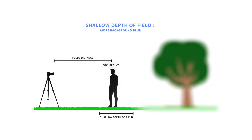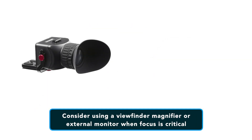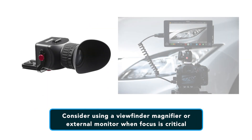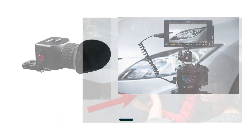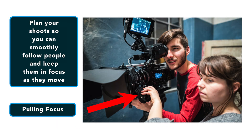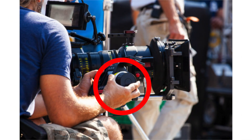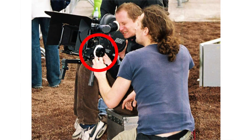Focusing can be extremely tricky with very shallow depth of field. Consider using a viewfinder, magnifier or external monitor when focus is critical. Also, plan your shoots carefully so that you can smoothly follow people and keep them in focus as they move. In Hollywood, there are people called focus pullers, and their job is simply to make sure that the camera is focused while the camera and/or the actors move.